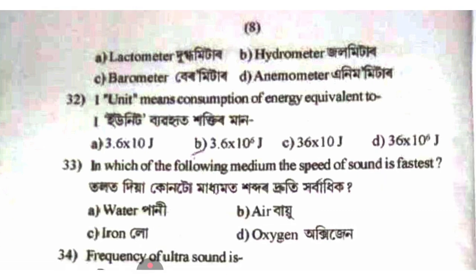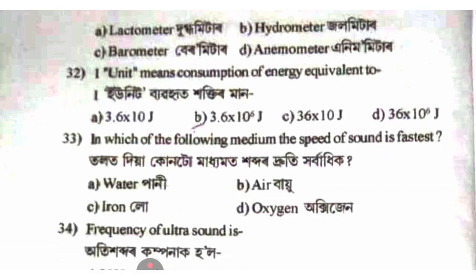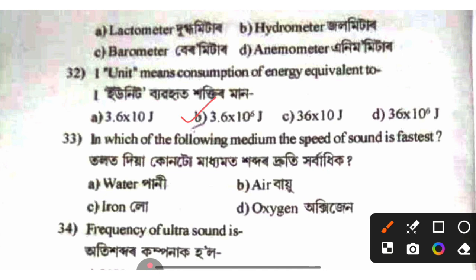One unit conversion: 1 unit equals 3.6 × 10⁶ joules.